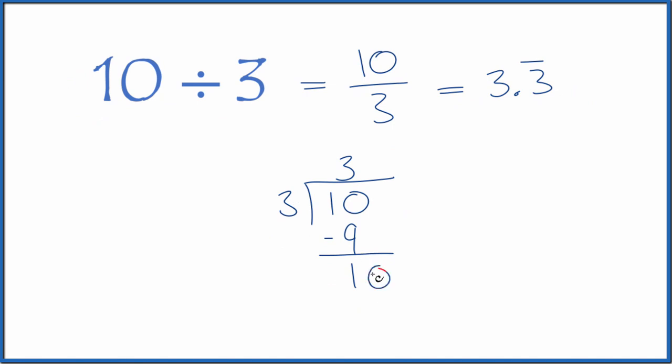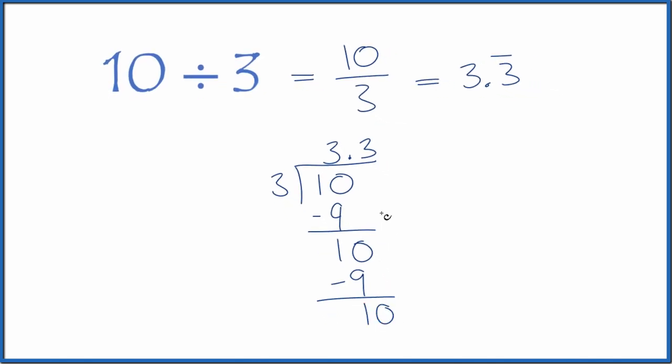3 doesn't go into 1. We could call this 10 if we put a decimal point up here. So 3 times 3 is 9. We subtract, we get 1, call it 10.